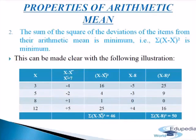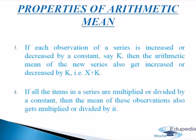Third property: if each observation of a series is increased or decreased by a constant k, then the arithmetic mean of the new series also gets increased or decreased by k. That is, new mean equals arithmetic mean plus k. For example, the arithmetic mean of 4 items — 3, 5, 8, 12 — is 7. If 2 is added to each of the 4 items, giving 5, 7, 10, 14, the mean will also increase by 2, giving a new mean of 9.